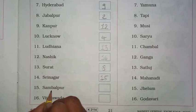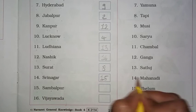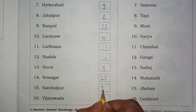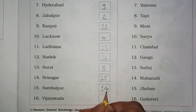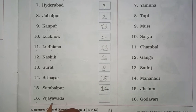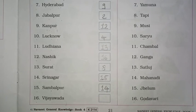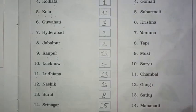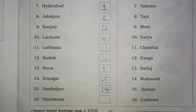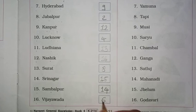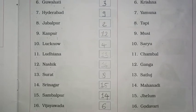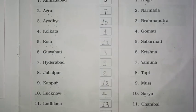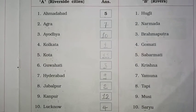Then 14, Srinagar — कहाँ पे आया हुआ है — Jhelum. तो यहाँ 15 आयेगा। Then 15, Sambalpur — कौन सी river के पास — Mahanadi. तो यहाँ पे हम 14 लिखेंगे। Then 16, Vijayawada — कौन सी river के पास — Krishna. तो यहाँ पे last में Sixth number आयेगा। ओके, यह आपको अपनी workbook में finish करना है। Thank you।